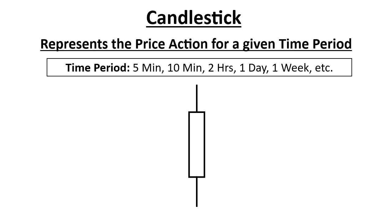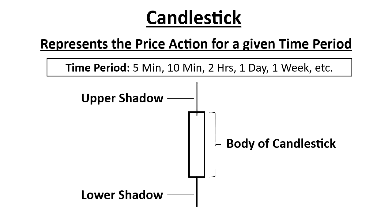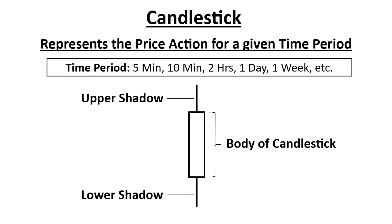Now what makes up a candlestick? Let's look at the anatomy of a candlestick. A candlestick has three parts: it has the upper shadow, it has the lower shadow, and it has the body. Those three parts of the candlestick tell us everything we need to know about the price. The upper shadow tells us something about the price, the lower shadow tells us something about the price, and the body of the candle tells us something about the price.